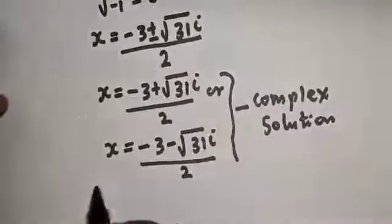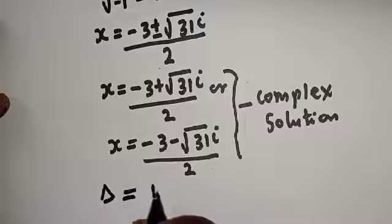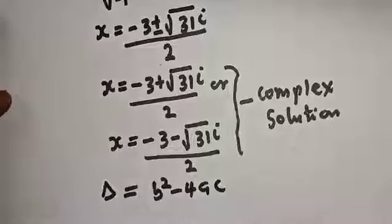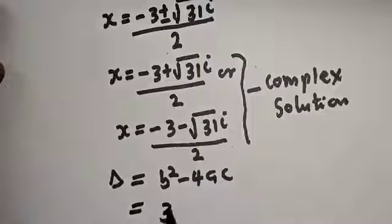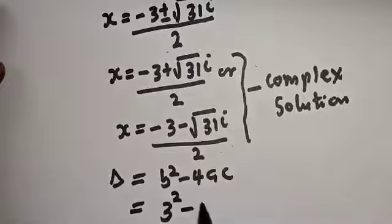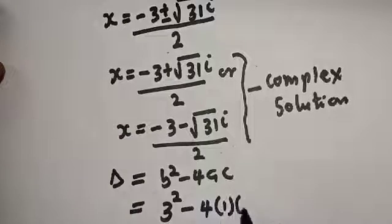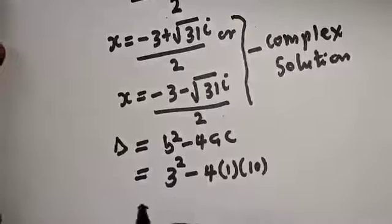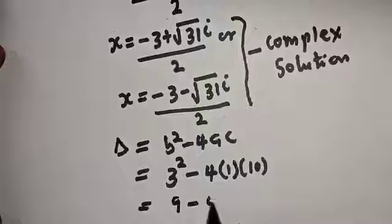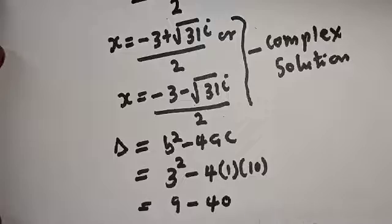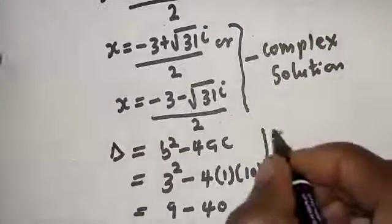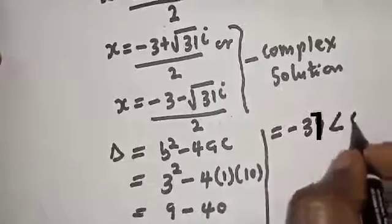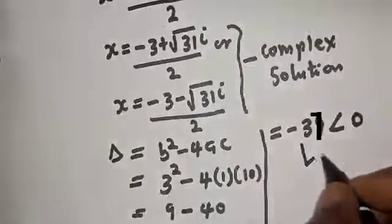Because the equation says we should find the real value of s, we can confirm this using the discriminant, which equals b squared minus 4ac. Here that is 3 squared minus 4 multiplied by 1 multiplied by 10, which equals 9 minus 40, equal to minus 31, which is less than 0. So this is rejected.